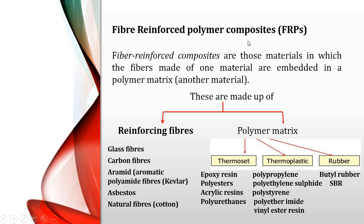Fiber reinforced polymer composites are those in which fibers are embedded in the polymer matrix — fibers made of one material and polymer matrix of another. The reinforcing fibers used include glass fibers, carbon fibers, and aramid fibers. Aramid means aromatic polyamide fibers; Kevlar is a well-known example.